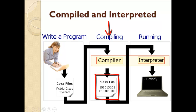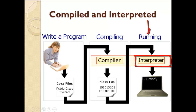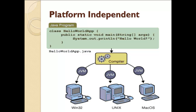The .class file contains machine instructions, but it is not the final executable code. To make these machine instructions into final executable code, we need to interpret them at the time of execution. After that we get the final native code, or machine executable code, and then the operating system with the help of hardware executes this code and generates the final output.